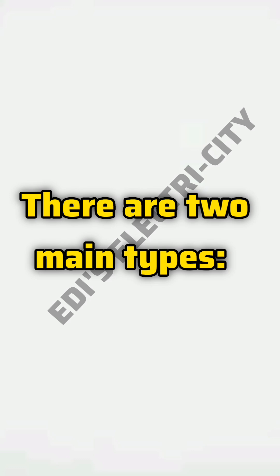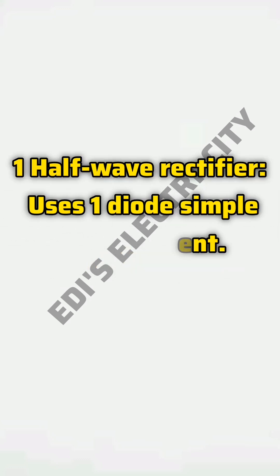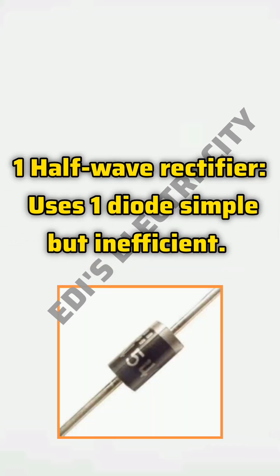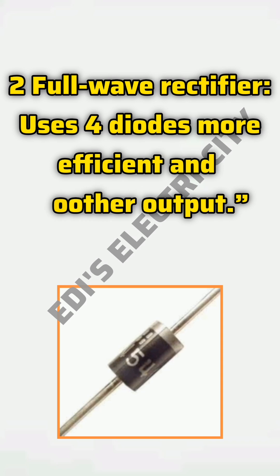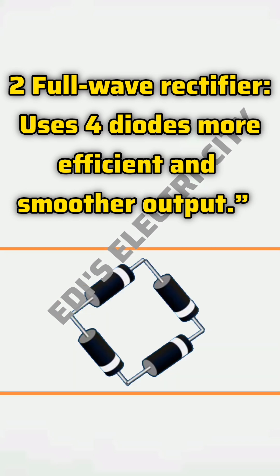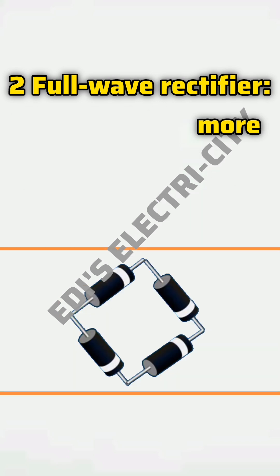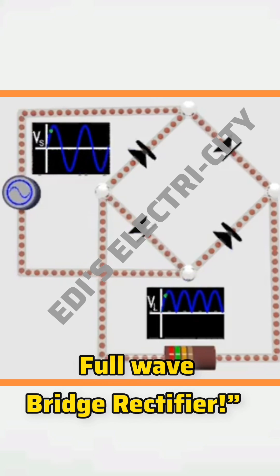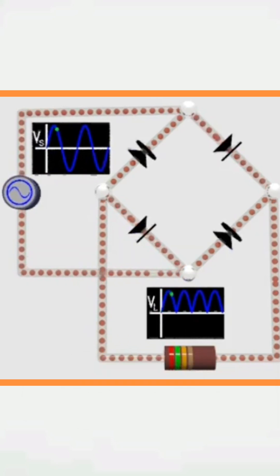There are two main types. First, the Half-Wave Rectifier, which uses one diode — simple but inefficient. Second, the Full-Wave Rectifier, which uses four diodes for more efficient and smoother output, also known as the Full-Wave Bridge Rectifier.